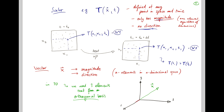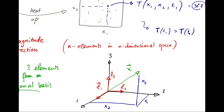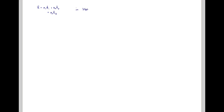Here we would have basis vectors e1, e2, and e3 — basis vectors in our class will be written as e. Our x vector can be written as a sum: x1 in the direction of e1, x2 in the direction of e2, and x3 in the direction of e3. So x equals x1 times e1 plus x2 e2 plus x3 e3.